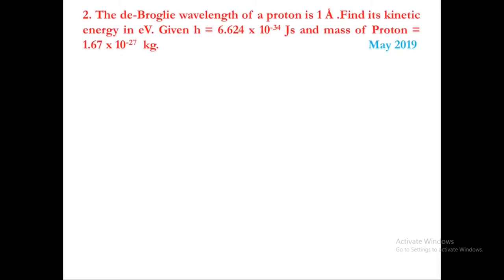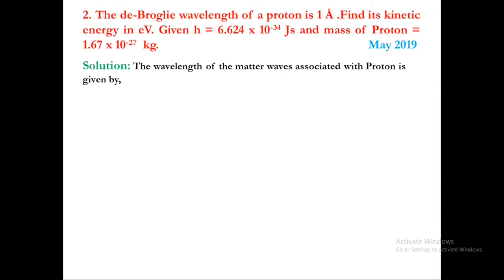Now let us look at the second problem. The de Broglie wavelength of a proton is 1 angstrom. Find its kinetic energy in electron volts. Given h is equal to 6.64 into 10 power minus 34 joule-seconds and mass of proton equal to 1.67 into 10 power minus 27 kg. The wavelength of the matter waves associated with a proton is given by lambda is equal to h divided by square root of 2mE.